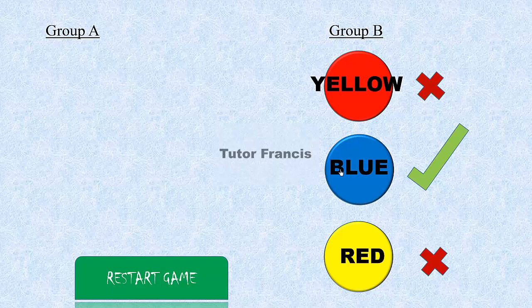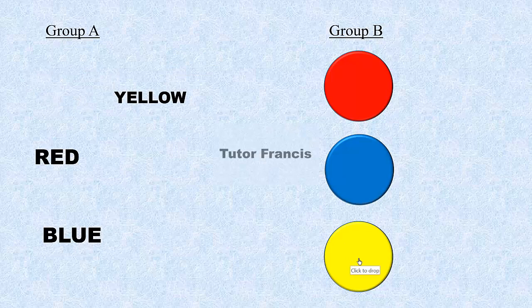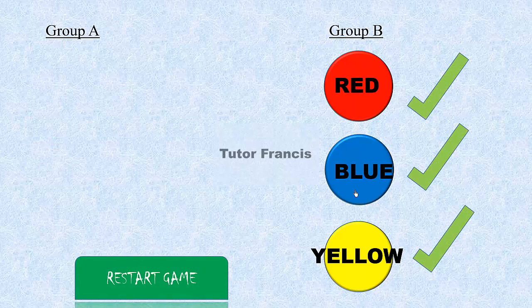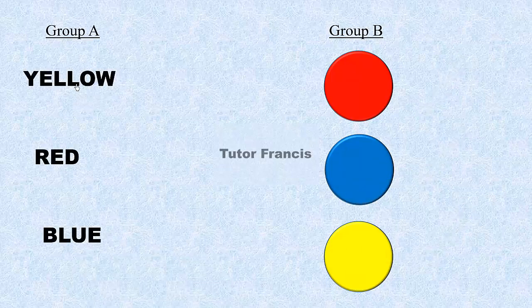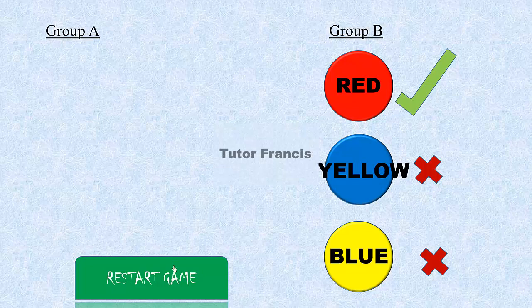Automatically the response will appear, and the third option will be solved because you cannot change your options. We can restart the game. This time the student can pick yellow and fix it on yellow, then blue on blue — automatically everything is correct. So that's how it works. Let's see how we can create this activity from scratch using hyperlinks and animations in PowerPoint.